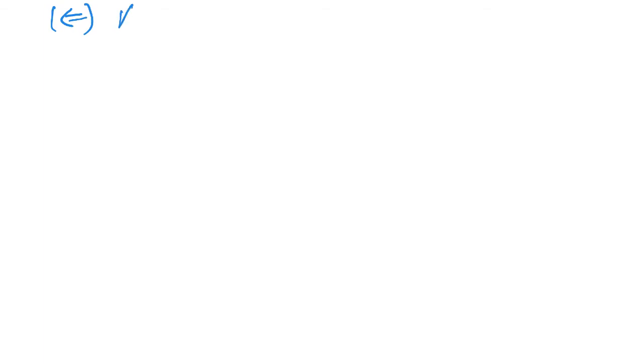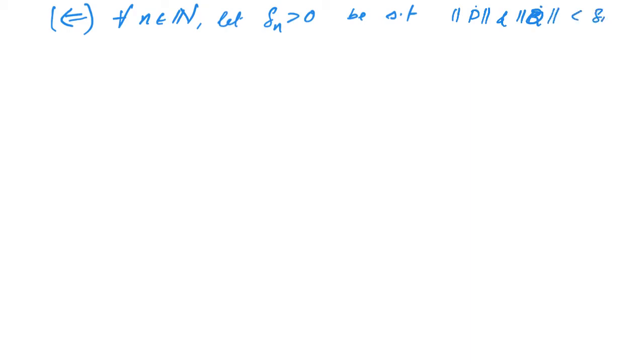Now we have to show the other direction: if the function satisfies the Cauchy criterion then it is indeed integrable. To do this we have to guess a limit. We will construct special partitions and use these to guess a limit. For each n in the natural numbers, let delta_n be greater than zero such that norm of P-dot and norm of Q-dot both less than delta_n implies |S(f, P-dot) − S(f, Q-dot)| is less than 1/n.